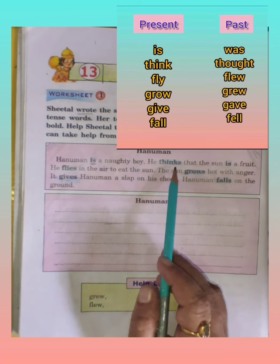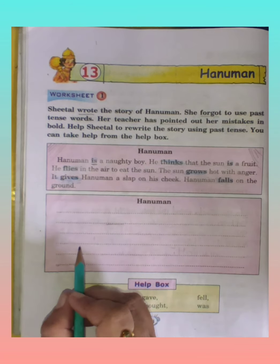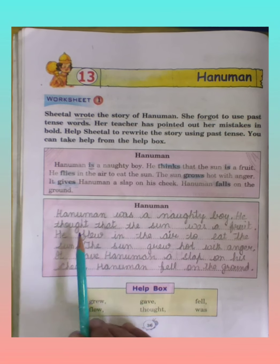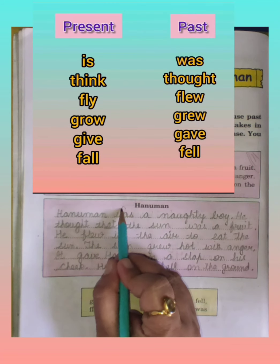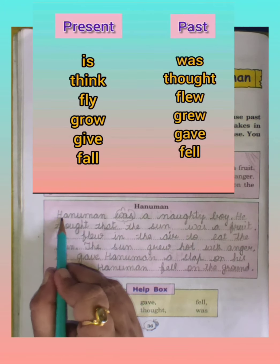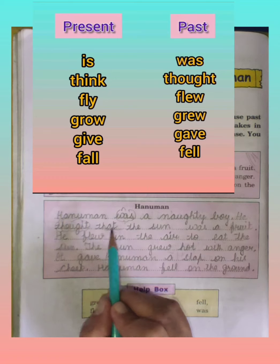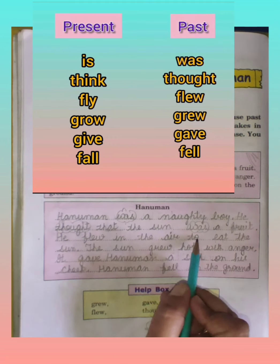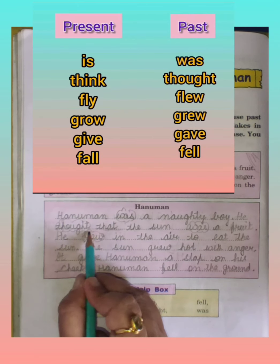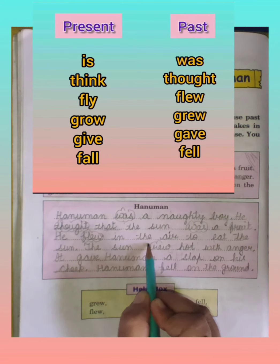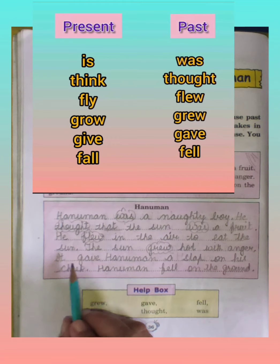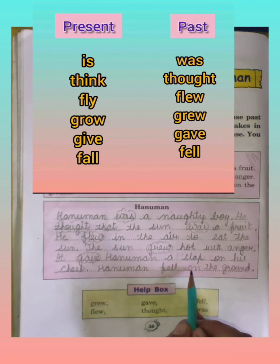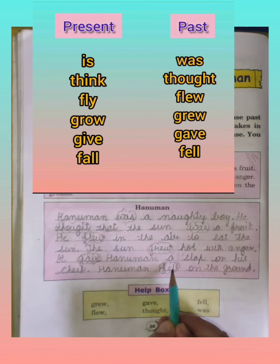We have orally done this story. Now we will read the corrected story. Hanuman was — 'is' past is 'was' — a naughty boy. He thought — 'thought' is past of 'think.' That the sun was a fruit. He flew in the air to eat the sun — 'flew' is past of 'fly.' The sun grew hot with anger. It gave Hanuman a slap on his cheek — 'gave' is past, 'give' is present. Hanuman fell on the ground — past of 'fall' is 'fell.'